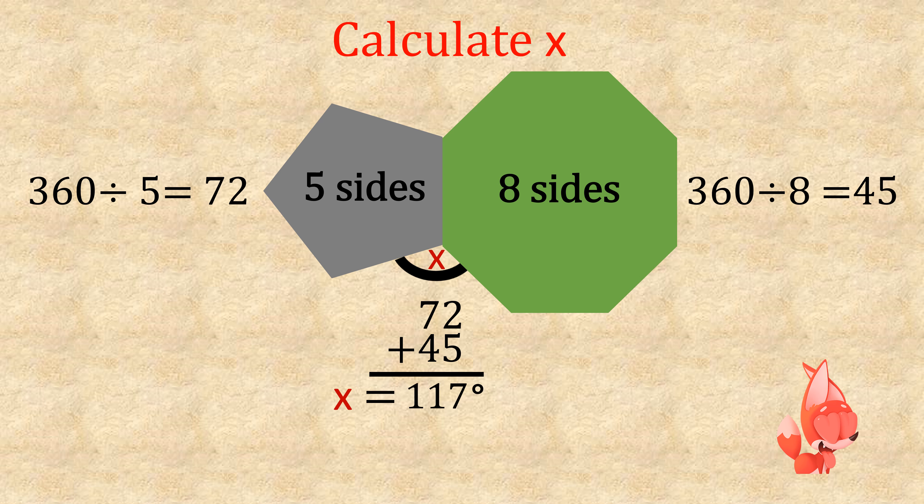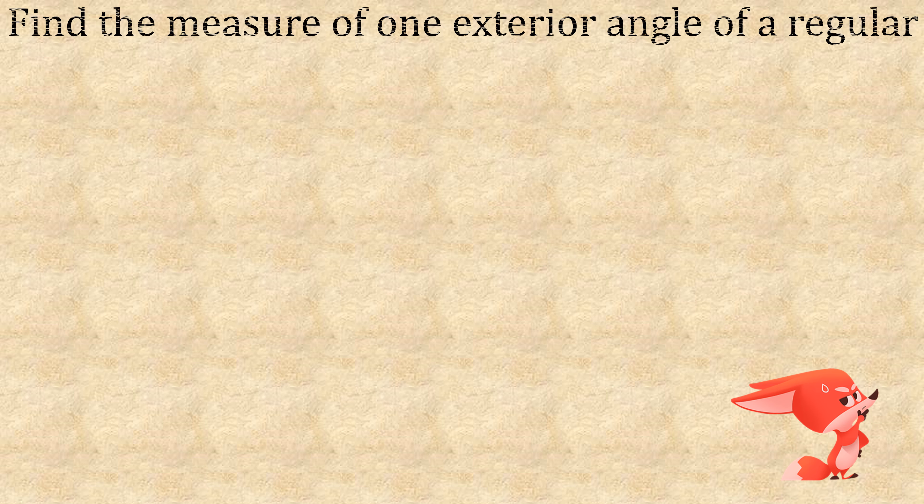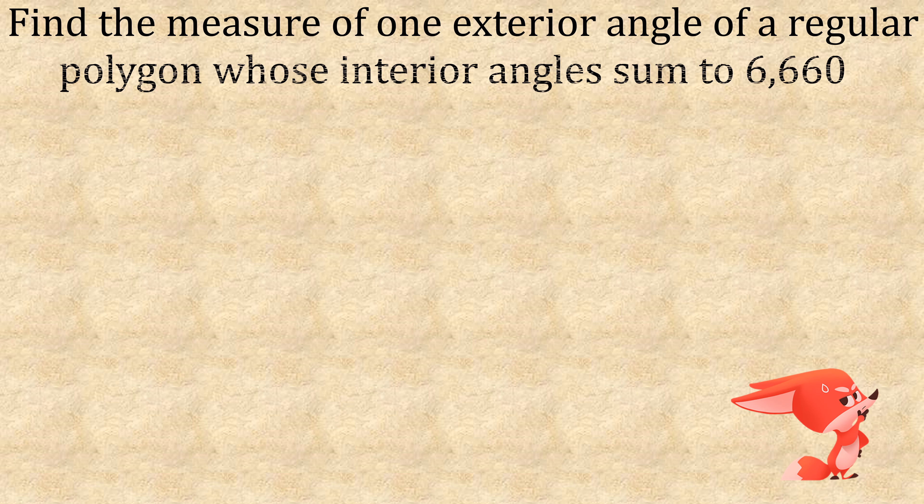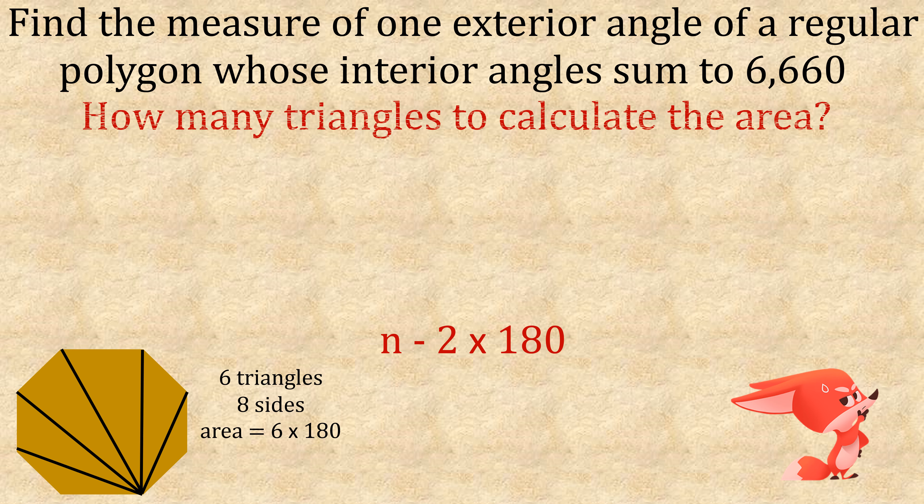An exam style question: find the measure of one exterior angle of a regular polygon whose interior angles sum to 6,660. Now we need to recap on the formula for interior angles on a regular polygon, which is n minus 2 times 180. We had to subtract 2 from the number of sides to find out how many triangles we needed to calculate the area. Now we're reversing it.